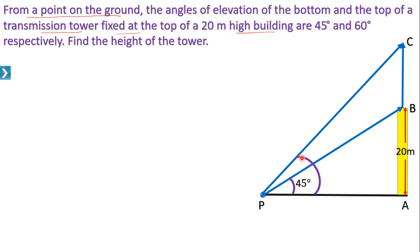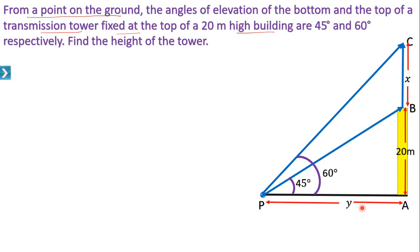Angle of elevation is always measured with the horizontal. Find the height of the tower — tower is BC, so height of the tower is distance BC. Let BC equal x, and let PA equal y, that is the distance of point P from the building. We have to find the value of x, the height of the tower.